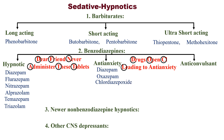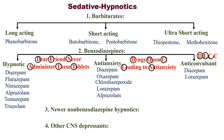O for oxazepam. C for chlordiazepoxide. L for lorazepam. And A for alprazolam. Then finally, anti-convulsant — remember D, L, C, C: diazepam, lorazepam, clonazepam, and clobazam.